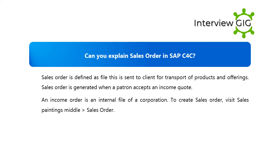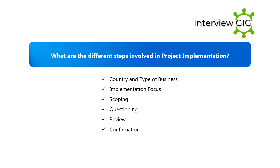Can you explain sales order in SAP C4C? A sales order is defined as a document sent to a client for transport of products and services. A sales order is generated when a customer accepts a sales quote. It is an internal document of a company. To create a sales order, visit the Sales work center and select Sales Order.